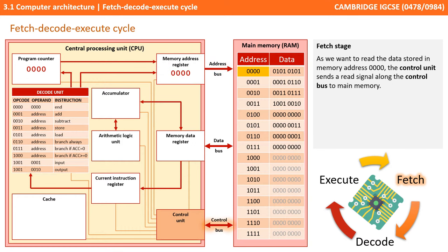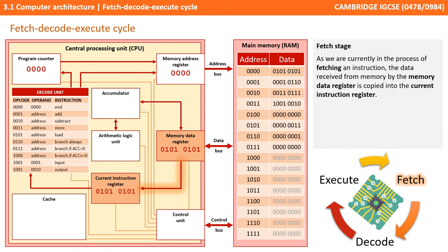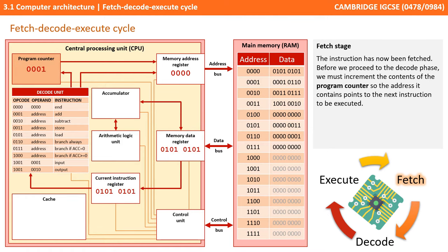As we want to read the data stored in memory address 0000, the control unit sends a read signal along the control bus to main memory. Now that main memory knows the data needs to be read, the content stored in memory address 0000 can be sent along the data bus to the memory data register. As we're currently in the process of fetching an instruction, the data received by the memory data register gets copied into the current instruction register.